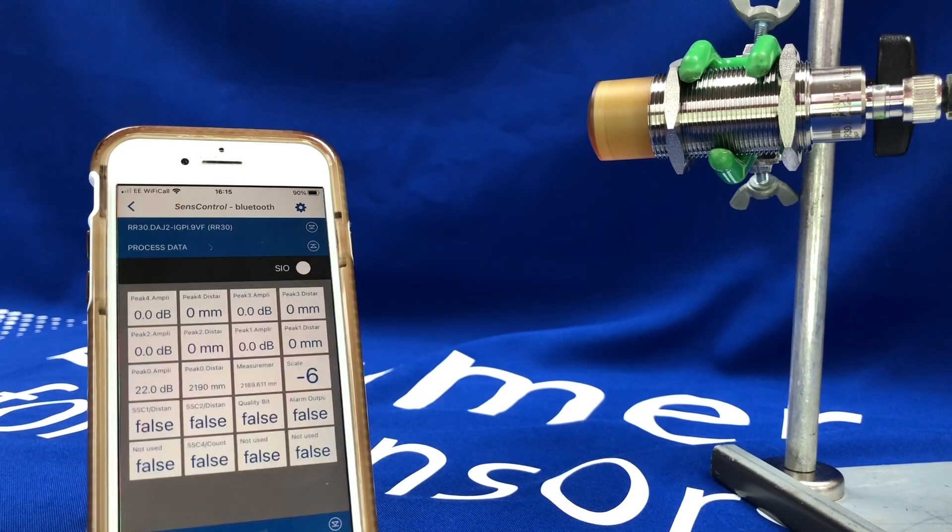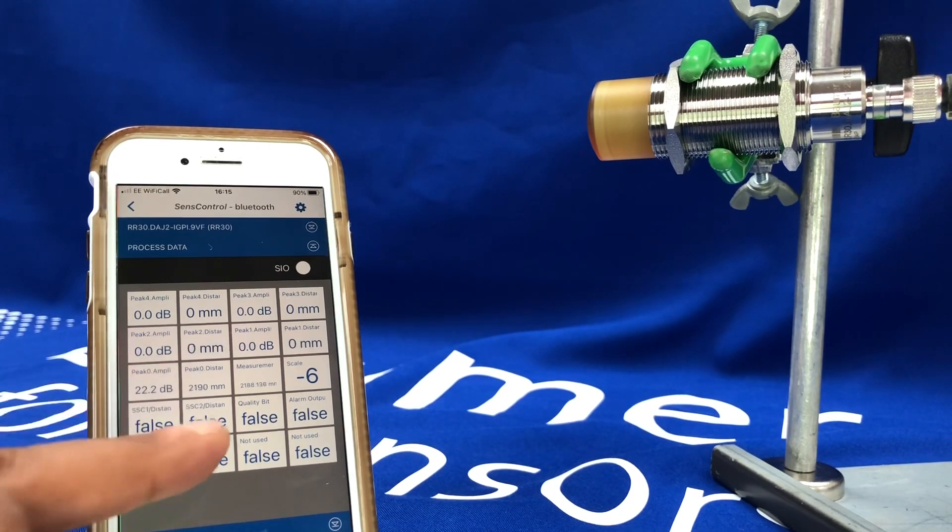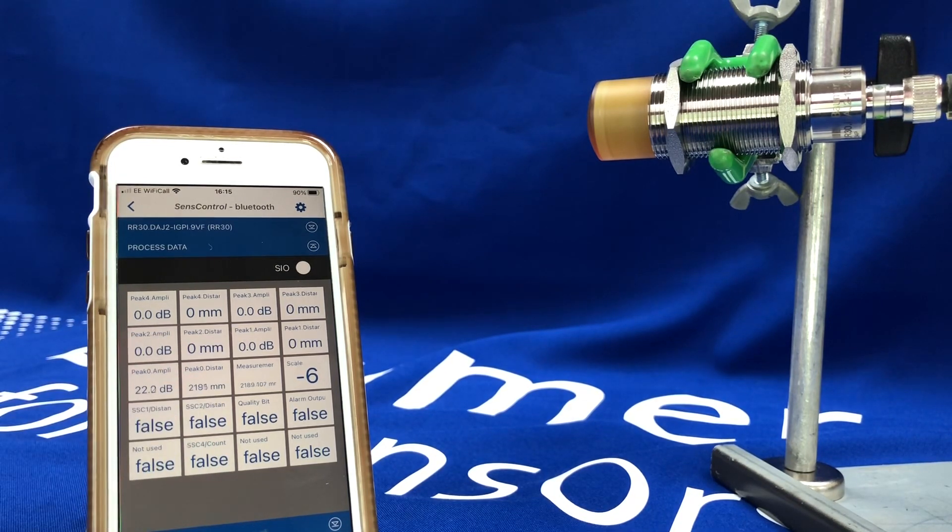I can now go into the process data, and the sensor is currently looking at a wall which is out of shot, around 2m away. It's giving me that peak distance of where that surface is and also the amplitude in decibels of that peak it's measuring on that surface.